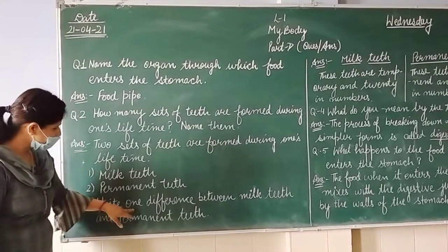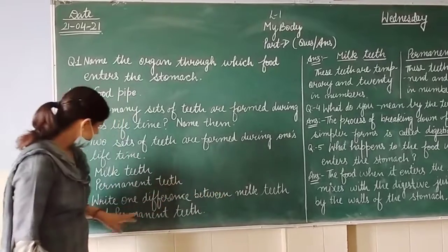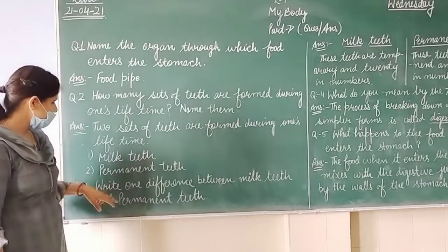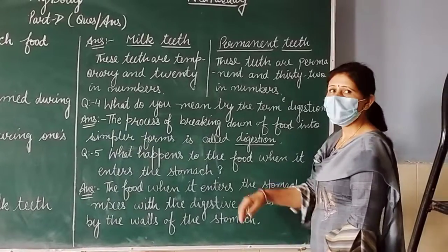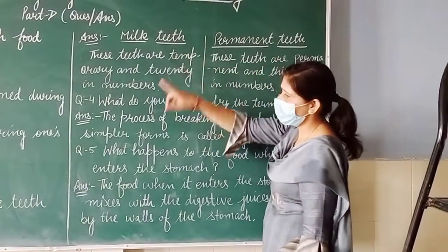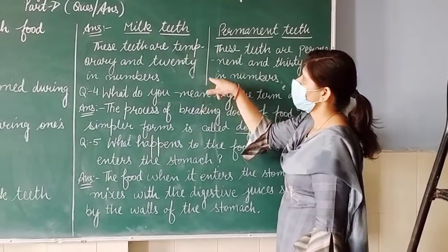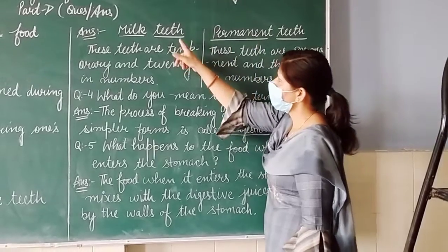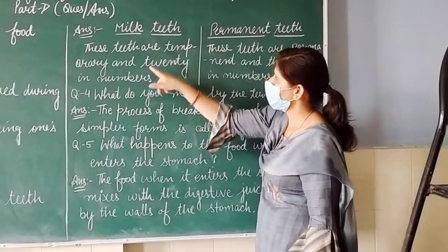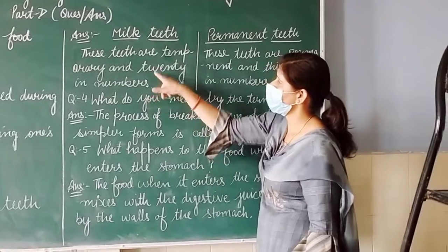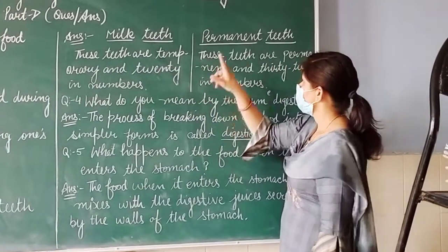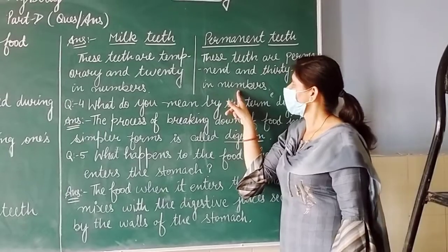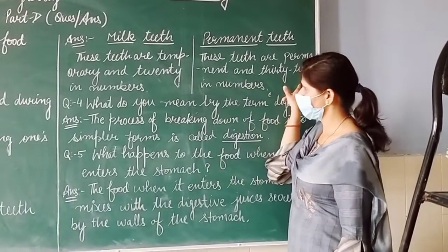Third question: write one difference between milk teeth and permanent teeth. Ek difference batana hai milk teeth aur permanent teeth mein. Answer: draw a line in the center — one side milk teeth, doosri side permanent teeth. Milk teeth: these teeth are temporary and twenty in number. Permanent teeth: these teeth are permanent and thirty-two in number.